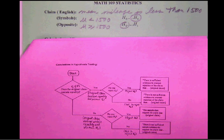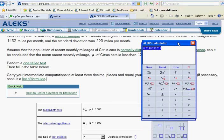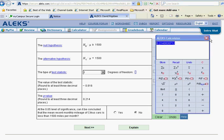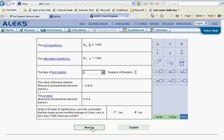So we see here then, can it be concluded that the mean recent monthly mileage is less? And no, we cannot support that with the facts. And that then concludes our hypothesis test for the mean with the sigma not known.